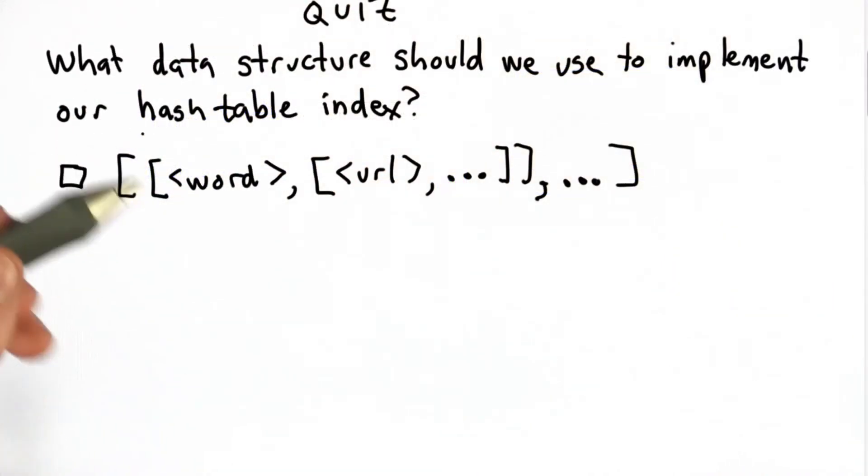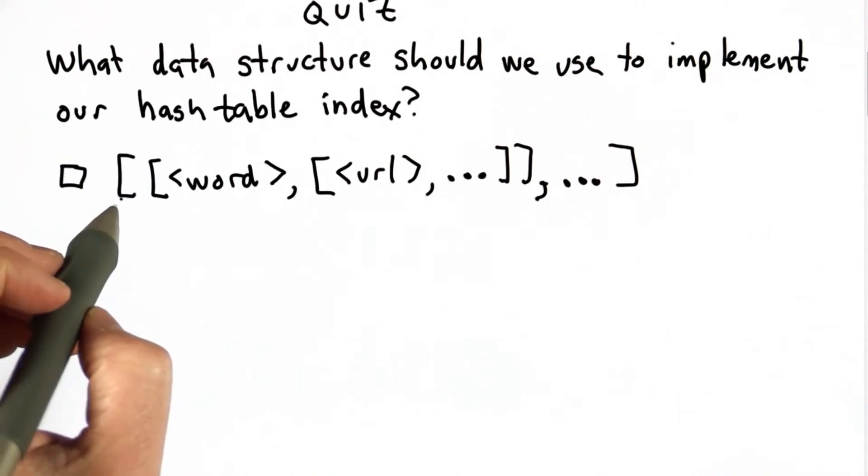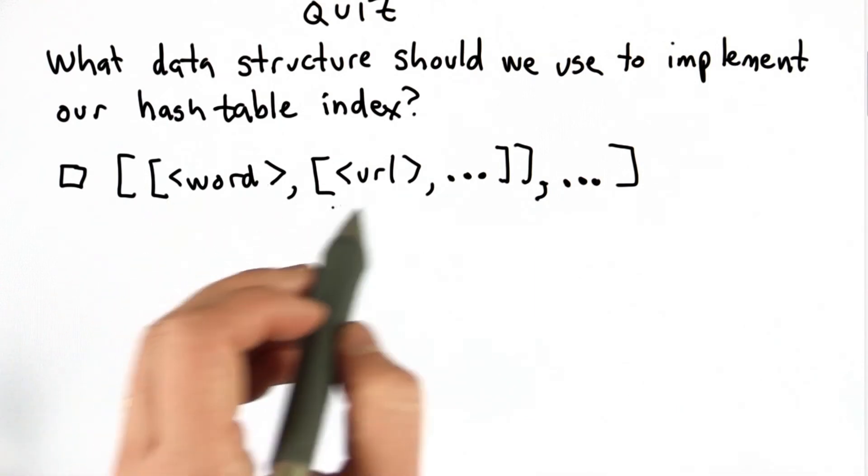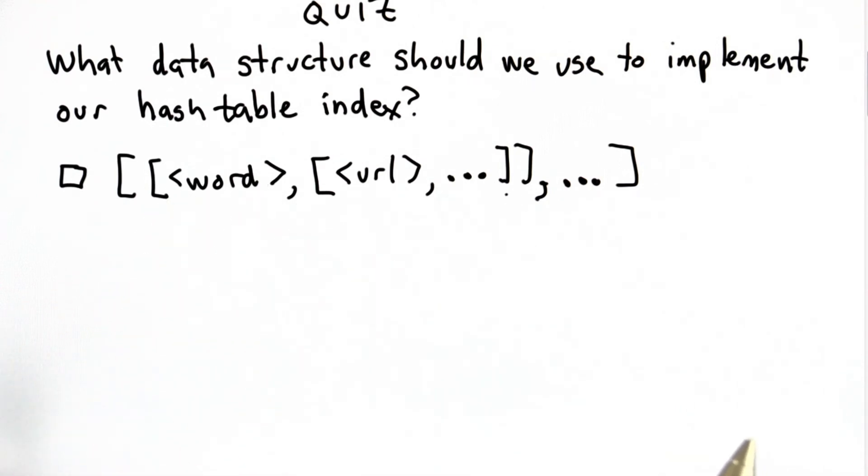The question is, which of these data structures would make most sense to implement the hash table index? The first choice is a list, where the elements are a list with the first element being a word, and the second element is a list of URLs where that word appears.